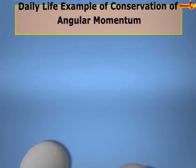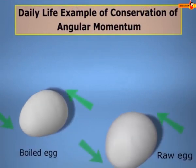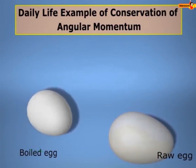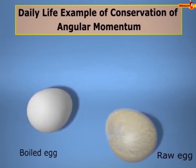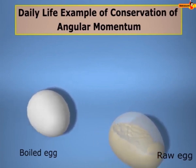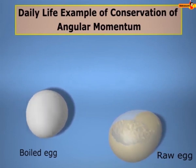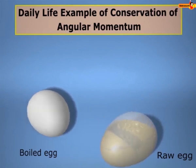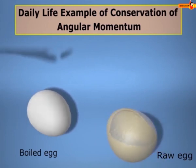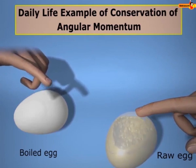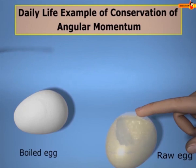Can you distinguish a boiled egg from a raw egg by spinning them? You can do so by observing what happens when a force is applied to spin them. A raw egg spins slower than a boiled egg when given the same torque, because the liquid particles inside the raw egg get pushed away from the center toward the shell, increasing its moment of inertia, and it acquires a lesser angular velocity.